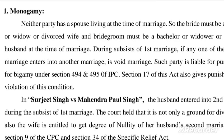The first condition is monogamy. Neither party has a spouse living at the time of marriage. The bride must be a spinster, widow, or divorced wife, and the bridegroom must be a bachelor, widower, or divorced husband. During the subsistence of a first marriage, if any party enters into another marriage, it is a void marriage. Such party is liable for punishment for bigamy under sections 494 and 495 of IPC. Section 17 of this Act also gives punishment for violation of this condition.